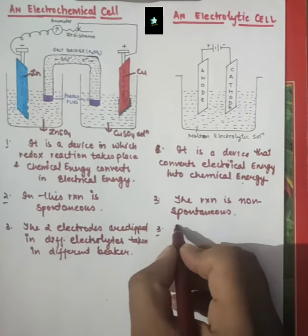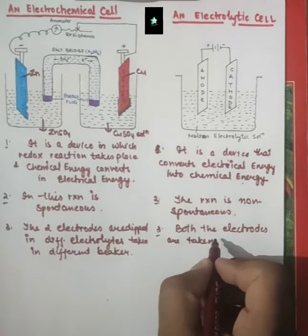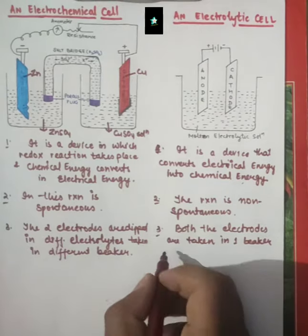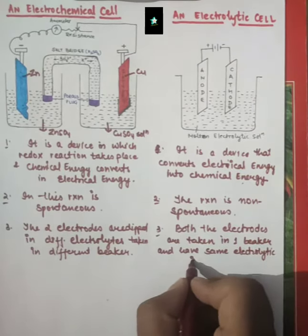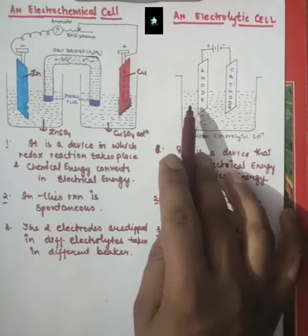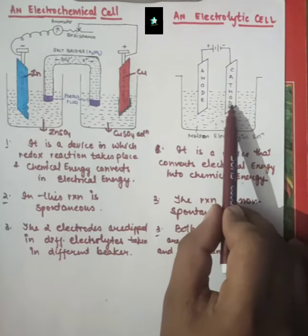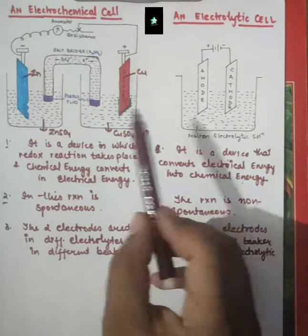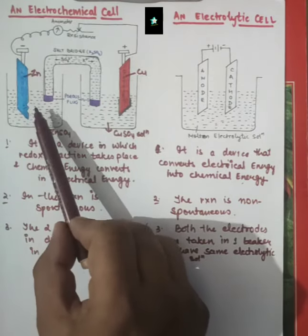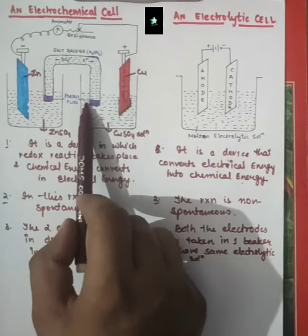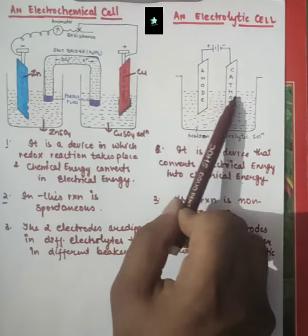In the electrolytic cell, both electrodes are taken in one beaker and have the same electrolytic solution. Both the anode and cathode are in the same beaker and share the same electrolytic solution. So in the electrochemical cell two beakers are present — one for the anodic half-cell reaction and one for the cathodic half-cell reaction — while in the electrolytic cell both reactions occur in the same single beaker.